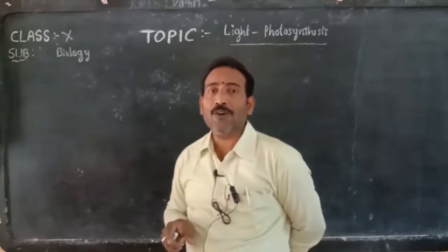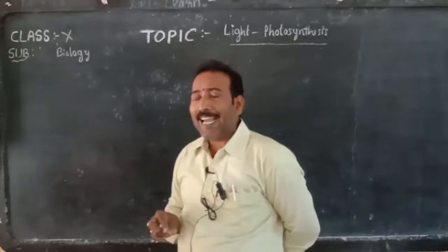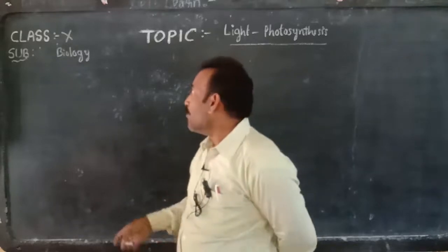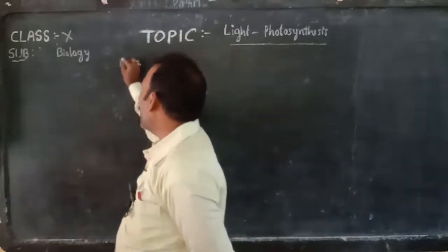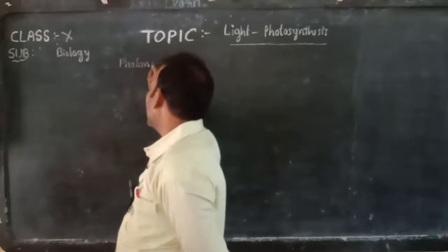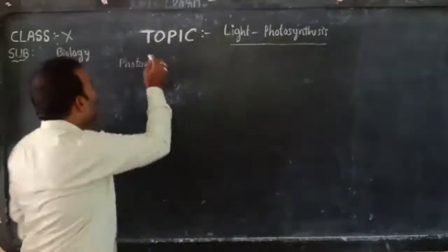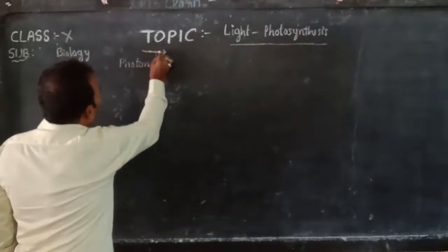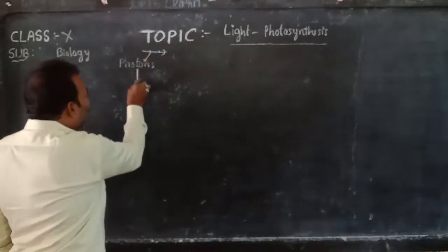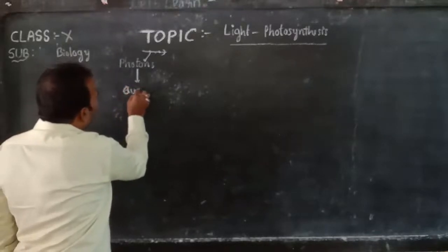Light is one form of energy. Light rays consist of tiny particles called photons. The energy carried by each photon is called a quantum.